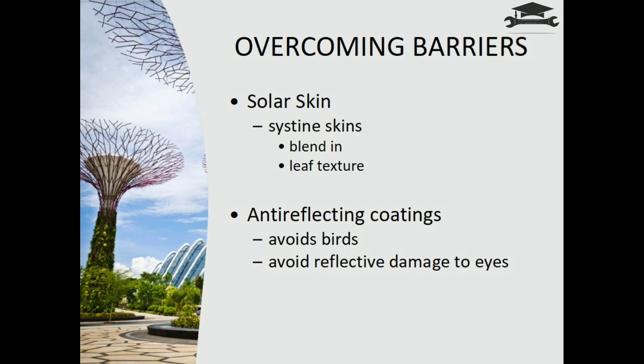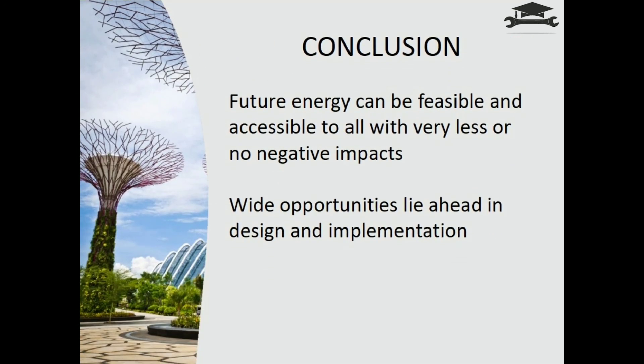Some ways to overcome these disadvantages: Solar Skin technology produces stick-on skins or designs for solar panels, which can also provide elegance and leaf texture. Bird repellent systems such as automated proximity lasers and bird repeller clips can be inbuilt into the system. Advancement in the design of anti-reflective coatings can reduce bird pecking and also negate reflective damage to eyes.